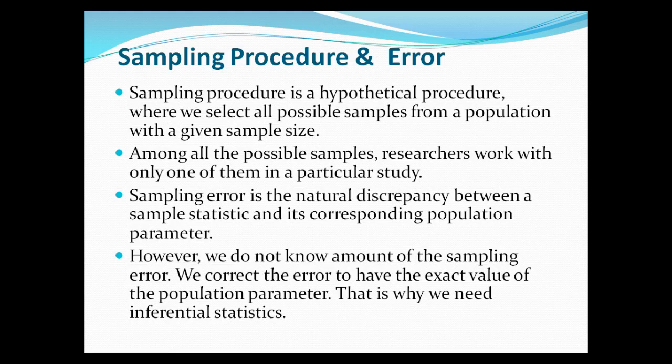With that, there is a certain amount of error, otherwise known as sampling error — a natural discrepancy between a sample statistic and its corresponding population parameter. There is always some amount of error between the population parameter and the sample statistic. However, we do not ever know for sure how much sampling error we have. We can estimate it and try to correct for it to have a more exact value of the population parameter.